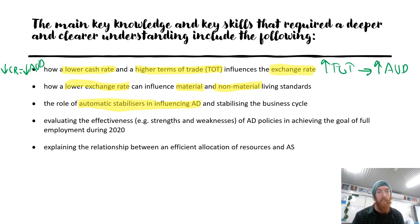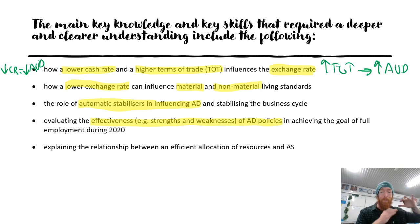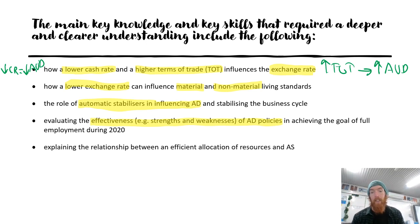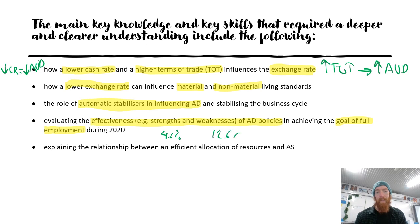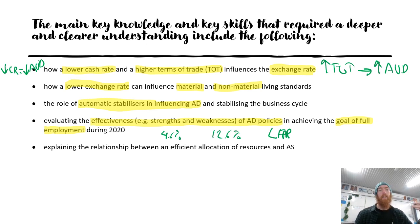Evaluating the effectiveness of ADA policies in achieving the goal of employment during 2020 is likely to be important this year. Budgetary and monetary policies have specific strengths and weaknesses — you need to be really specific about impact lags, implementation lags, political bias, and targeting specific sectors. For full employment, although the 4.6% unemployment rate technically shows it's being achieved, the underemployment rate is about 12.6% and the labour force participation rate is falling, meaning people aren't working to capacity — so you'd weigh all that data when evaluating whether full employment is truly being achieved.